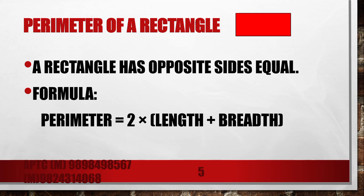Next, rectangle. A rectangle has two pairs of opposite sides that are equal. Formula is very simple. Perimeter = 2 × (length + breadth).